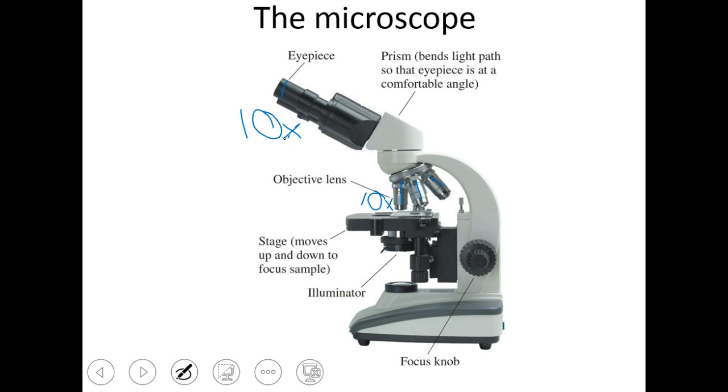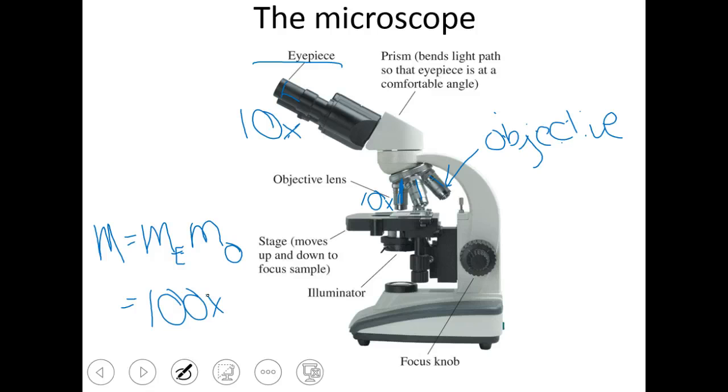And to find the magnification of a microscope, I take the magnification of the, what we call objective. So this is the objective. And I multiply it by the magnification of the eyepiece. And so the magnification of a scope is equal to the magnification of the eyepiece multiplied by the magnification of the objective. And so like for this one, if I've got a 10x objective and a 10x eyepiece, then I'm going to get a total magnification of 100x. We're going to play with some microscopes in class so that you can work on playing with this.